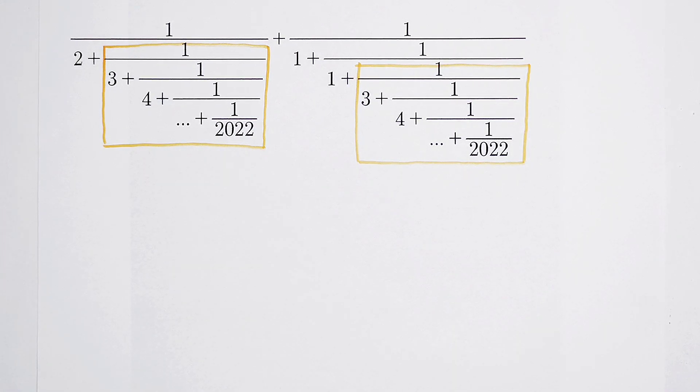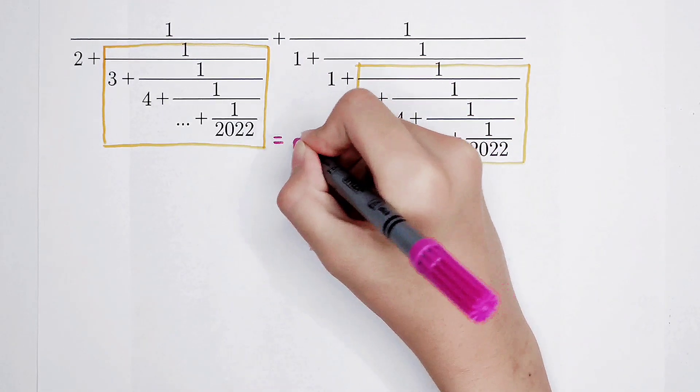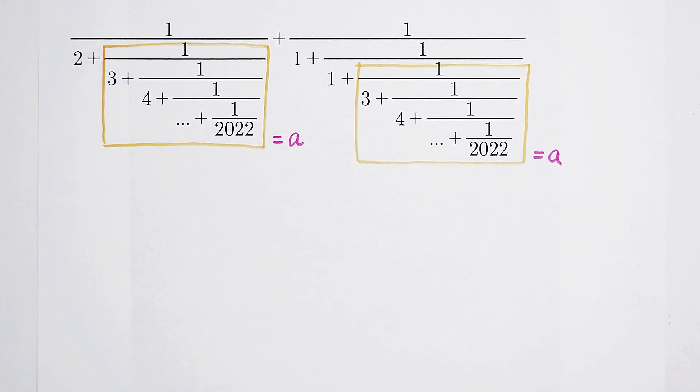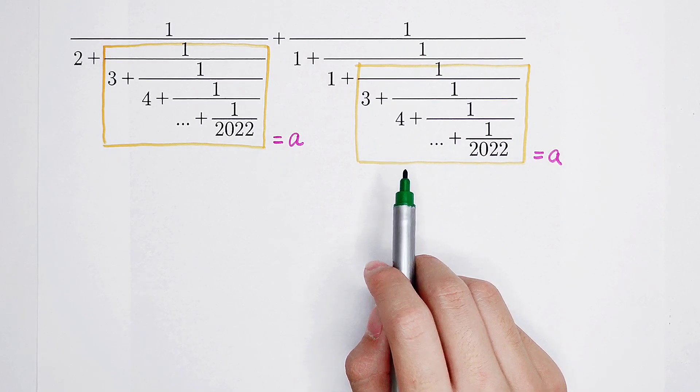So we can let the same part of them, I think, is a. And this is also a. They have been both let as a. Now, we can do it.